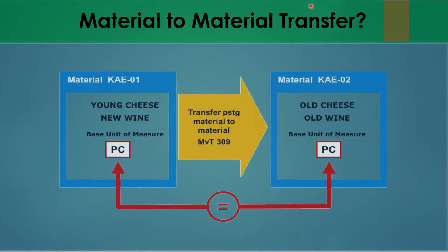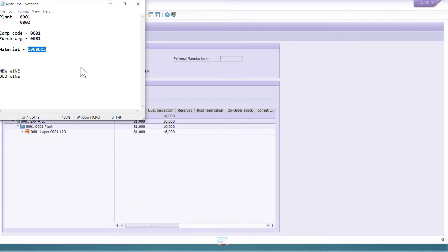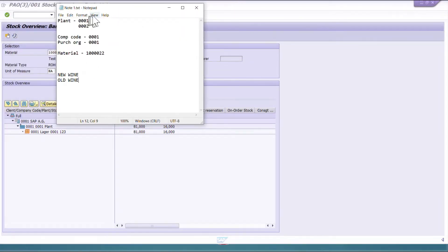For material-to-material transfer, here are examples: young cheese transferred to old cheese after months, or new wine transferred to old wine and then increasingly aged wine at different price points. Let's perform this in the system. I have materials 'new wine' and 'old wine' created. I'll use these for the demo.